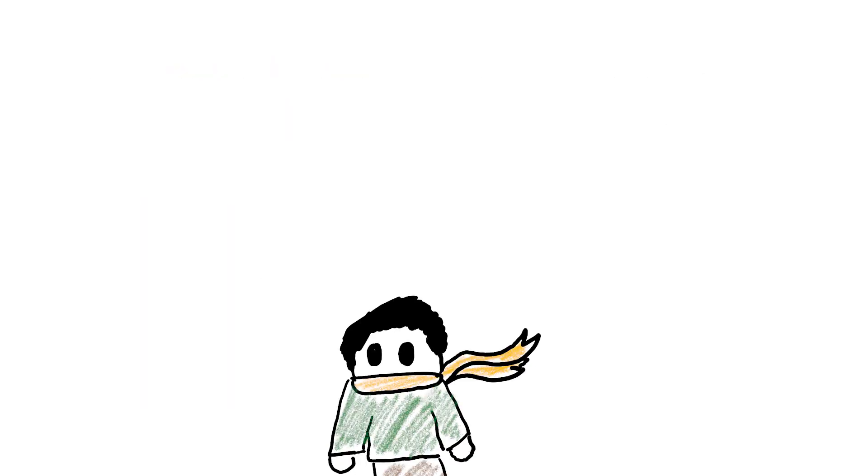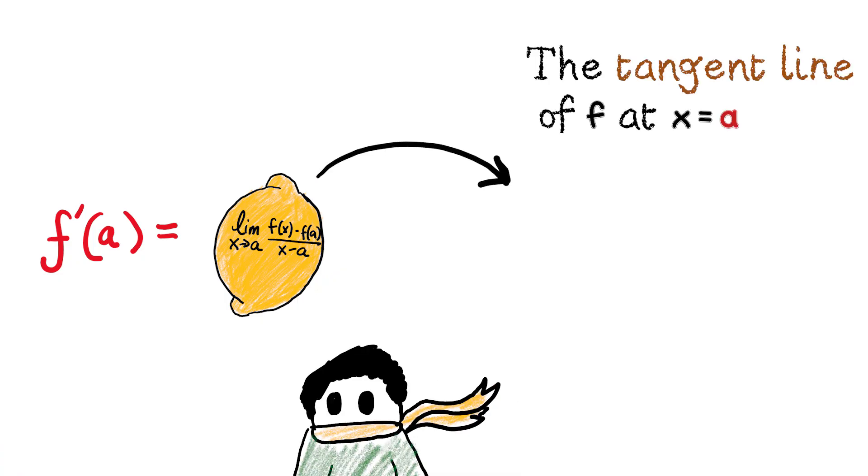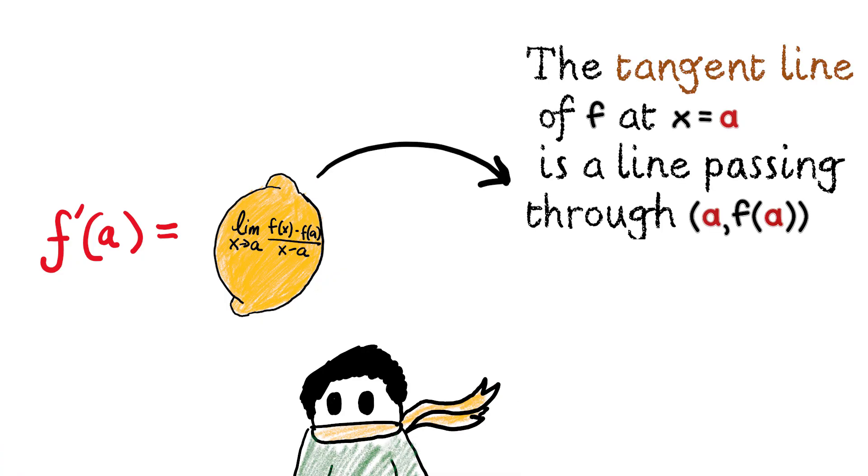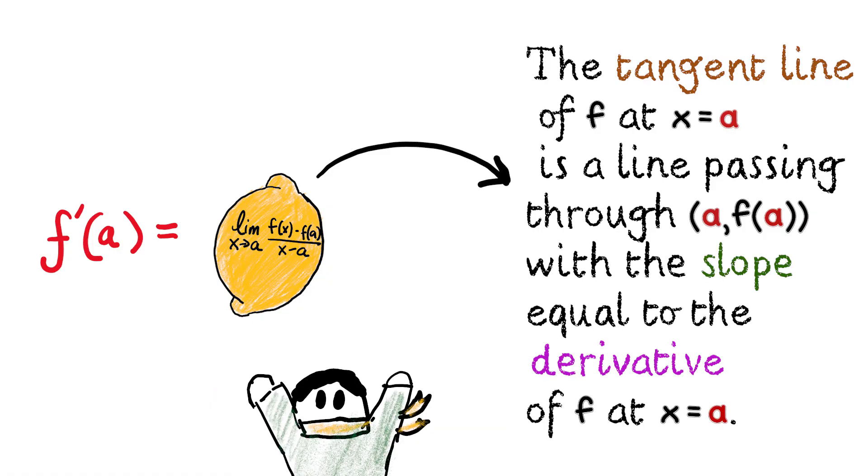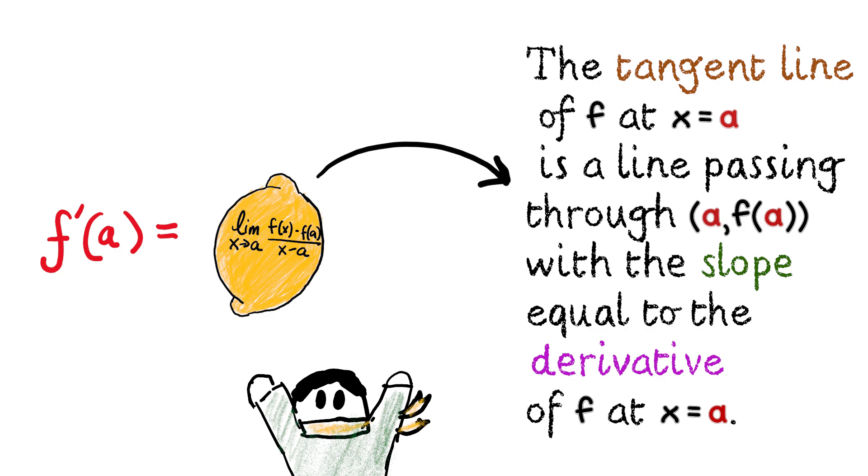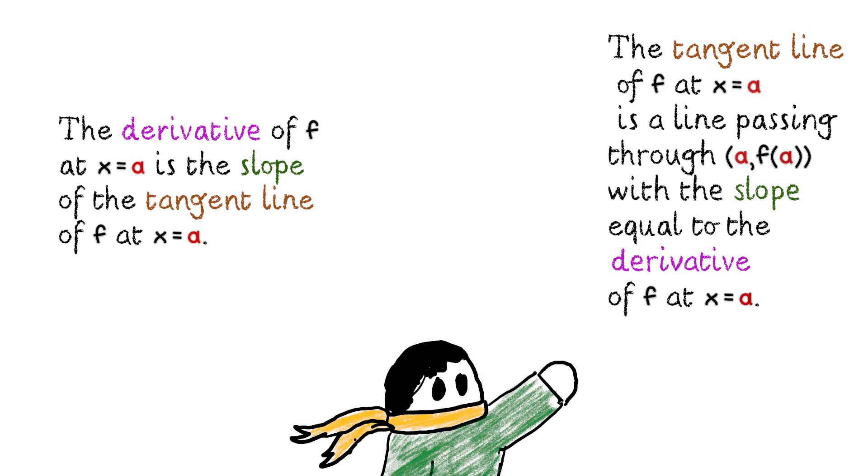So in the world of calculus, it might be more correct to first define the derivative as a limit, and then say that the tangent line of f at x equal to a is a line passing through (a, f(a)) with the slope equal to the derivative of f at x equal to a. None of the formulations are wrong, but the latter one feels more causal than the other.